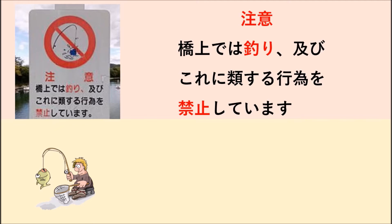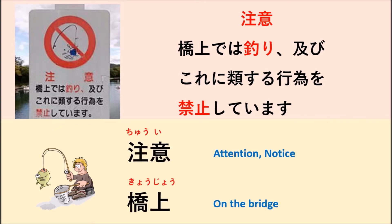In this sign they write in kanji — kanji, hiragana, and so on. So let's learn word by word, step by step. The first word we learn is chui. Chui means intention or notice.